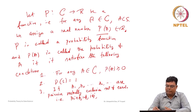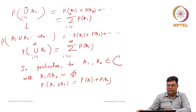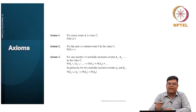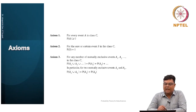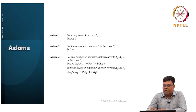In particular, for two mutually exclusive events A1 and A2 — with A1 intersection A2 equal to phi — the probability of A1 union A2 equals P(A1) plus P(A2). So for any number of mutually exclusive events, the probability of their union equals the sum of their individual probabilities. These are the three axioms of the axiomatic definition of probability.